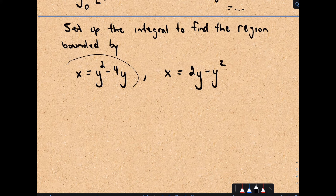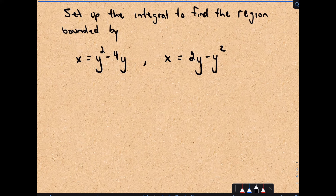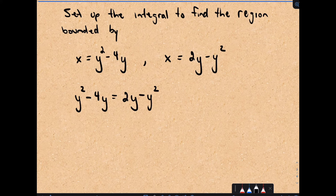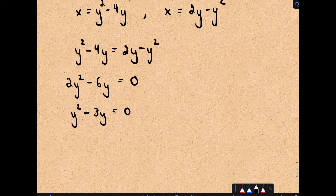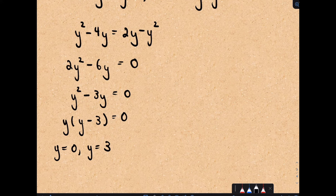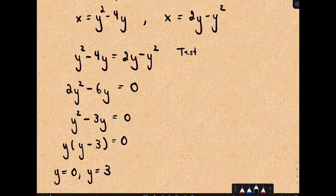Let's set up the integral to find the region bounded by x equals y squared minus 4y and x equals 2y minus y squared. We're not given an interval, so again I'll find points of intersection. Setting y squared minus 4y equal to 2y minus y squared, adding y squared and subtracting 2y gives 2y squared minus 6y equals 0. Dividing by 2: y squared minus 3y equals 0. Factoring out y gives y(y minus 3) equals 0, so y equals 0 and y equals 3.